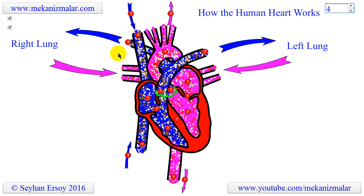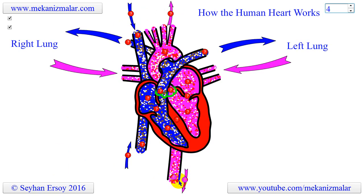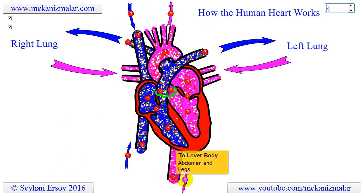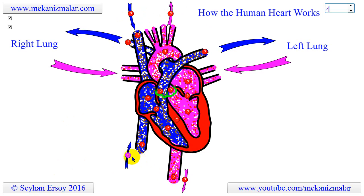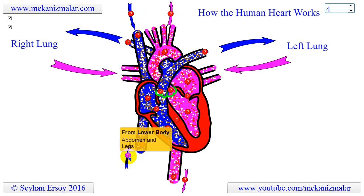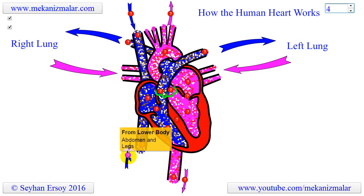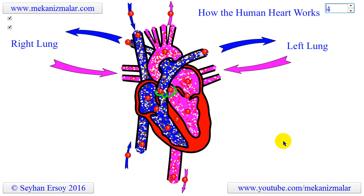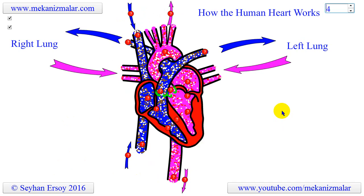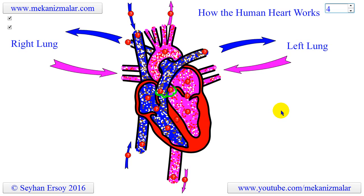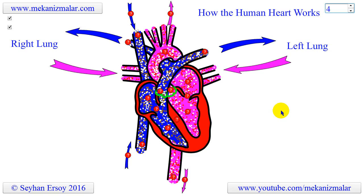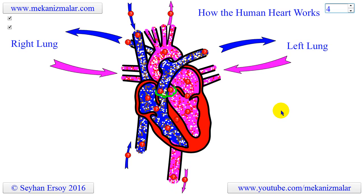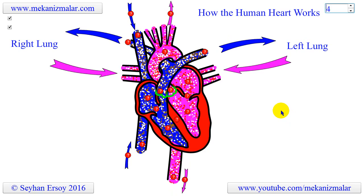To understand this magnificent machine we should first understand some facts about it. A healthy heart beats 70 times a minute. During each heartbeat it pumps an average of 75 milliliters of blood out of the heart. It can move 5 to 7 liters of blood in one minute and 7,600 liters per day.